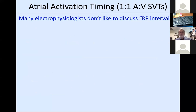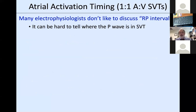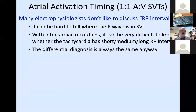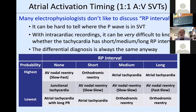Long RP tachycardias can be atrial tachycardias, atypical AV nodal reentry (anterograde fast, retrograde slow), or orthodromic reentry with a slowly or decrementally conducting accessory pathway. Many electrophysiologists don't even want to discuss the RP interval—it's hard to tell where the P wave is in SVT, and with intracardiac recordings it can be extremely difficult. The differential diagnosis is always the same anyway, and AV nodal reentry and atrial tach appear across all RP categories.